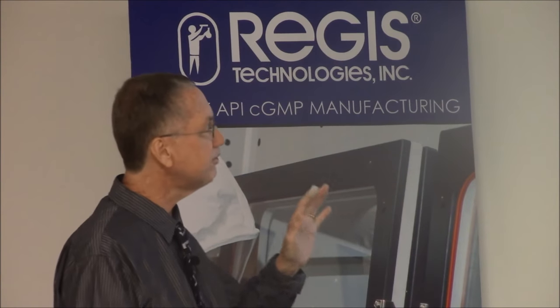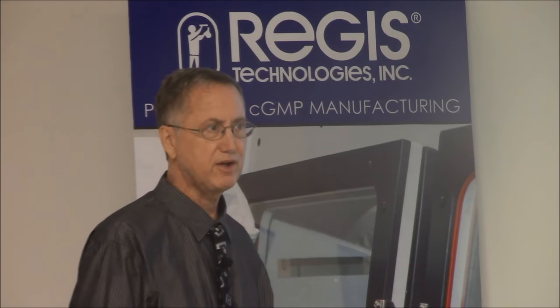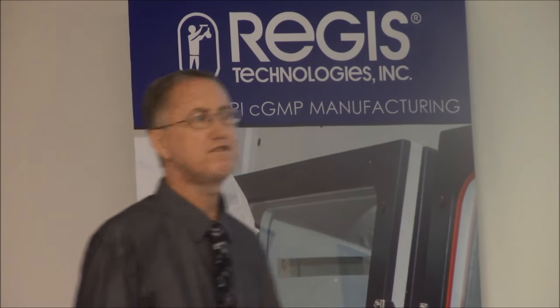Beyond looking at that one response factor number, you also want to acknowledge your degradation products. When material has completely gone away, we write 'degraded.' The columns in the summary table represent the impurities observed and the rows represent the different stress treatments. You'd like to show chromatograms in your report and numerically confirm how much degradation you got. If you lost 45% of your parent, do you see 45% showing up as the sum total of all your impurities? That's mass balance, something to keep in mind.